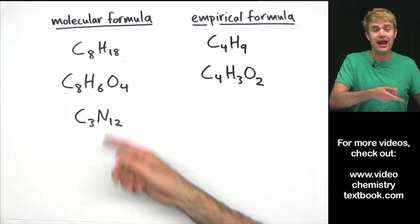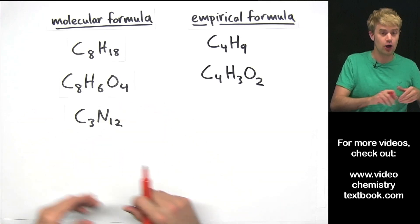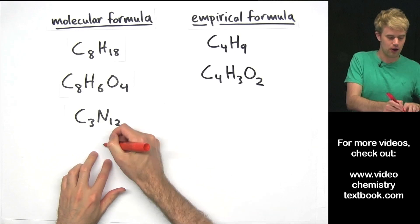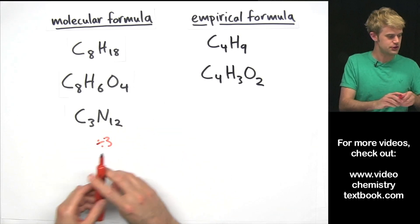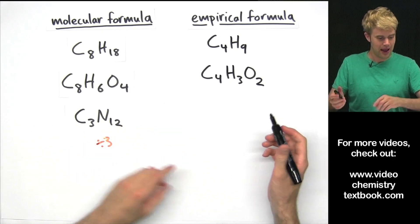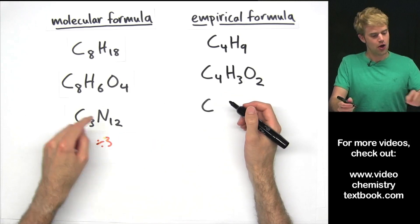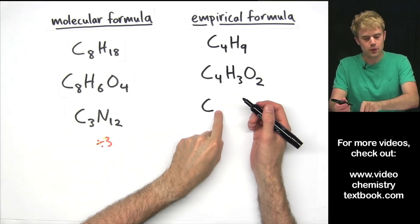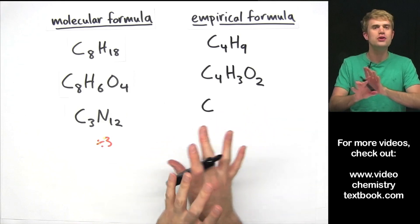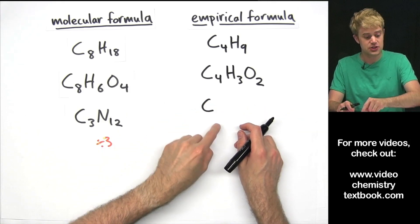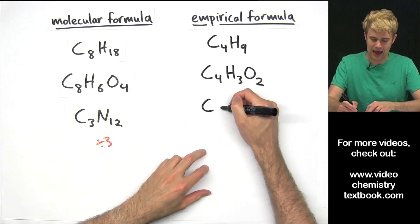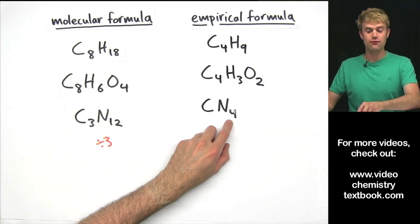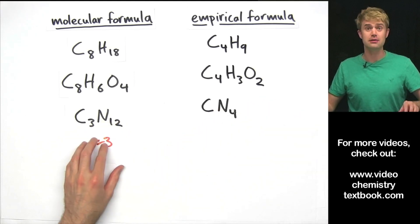C3N12 — what can we divide everything by here to reduce it down? Both 3 and 12 are divisible by 3, so we'll divide by 3 and we'll get C. 3 divided by 3 is 1, but remember when we're writing chemical formulas and we have a 1, we just don't write anything, so it's just C. Then N — 12 divided by 3 gives us 4 — so CN4 is the empirical formula.